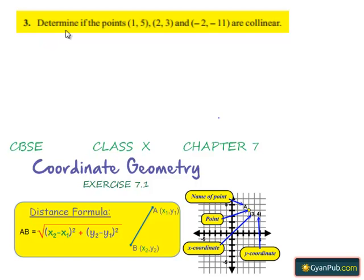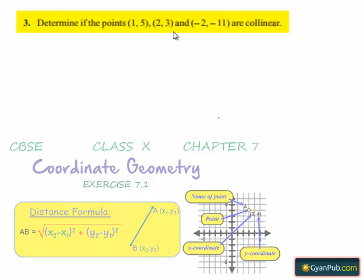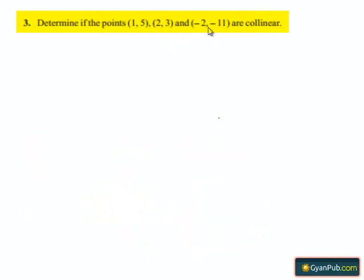Coming to the third question: determine if the points (1,5), (2,3) and (-2,-11) are collinear.